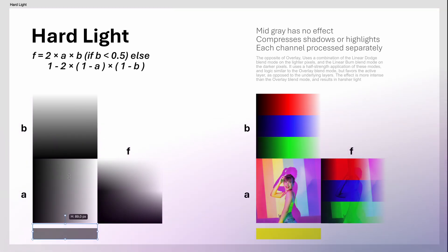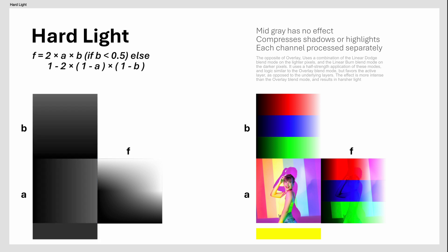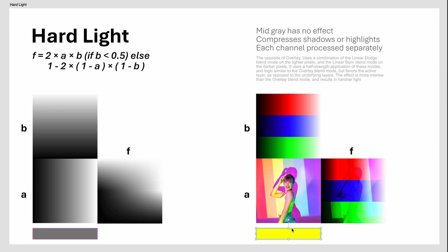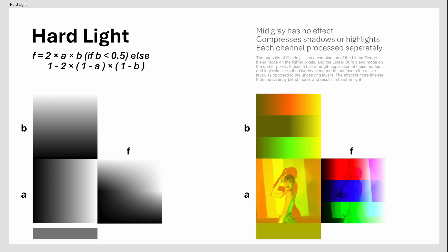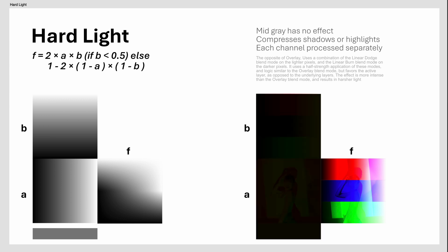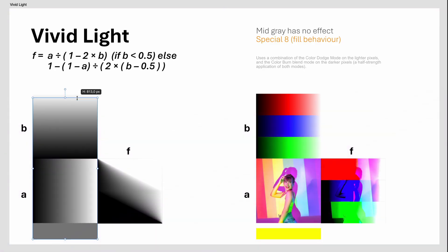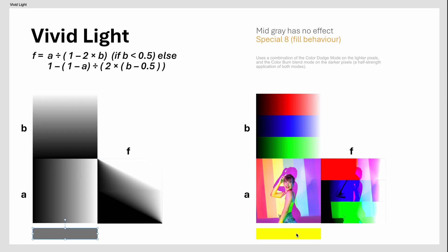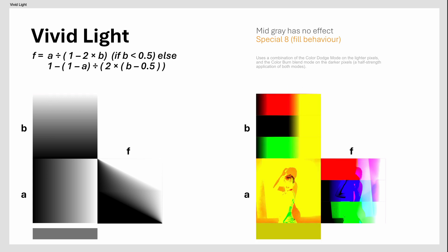The Hard Light Blend Mode is basically the same as the Overlay Blend Mode, with the difference that the active or top layer is used to determine dark or light pixels for the calculation. In a sense the opposite of Overlay — usually has an intense and dramatic effect. The Vivid Light Blend Mode uses a combination of Color Dodge and Color Burn, resulting in strong contrast and highly saturated colors. Can be used to stylize images in a unique way.